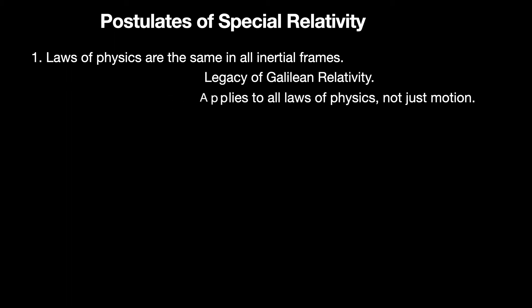So Einstein constructed his special theory of relativity also based on two postulates. The first one apparently had the same content as that of Galilean relativity, namely the laws of physics are same in all inertial frames. Though here laws of physics actually means all laws of physics, not just laws of motion. This difference with the Galilean relativity is mainly due to the second postulate of special relativity as we will see.